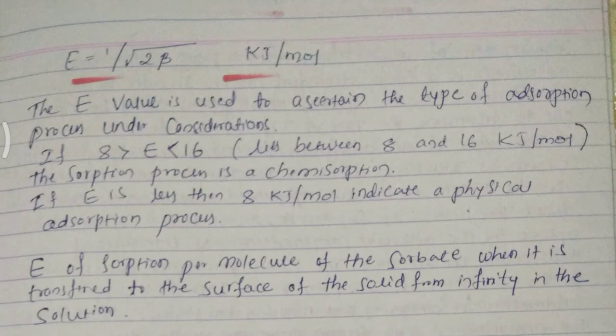If 8 is greater than E and E is less than 16, means the value will lie between 8 and 16 kilojoule per mole, the sorption process is chemisorption.